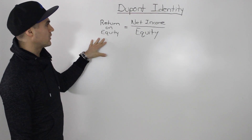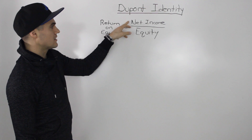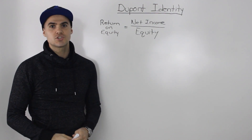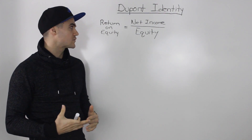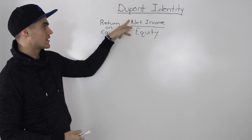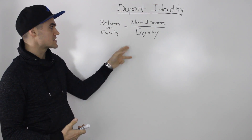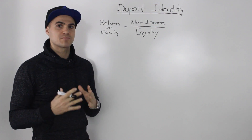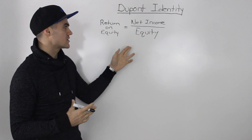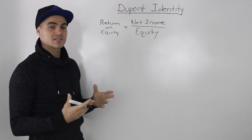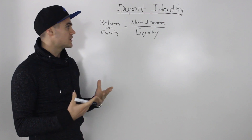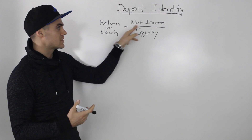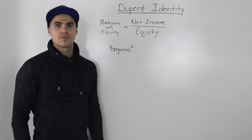Return on equity, we know, is equal to net income over equity. This ratio is one of the more popular ones from financial statements — net income being from the income statement and equity being from the balance sheet. Shareholders especially like this ratio because it tells them what kind of return they're getting, as they're represented by the equity section in the balance sheet.